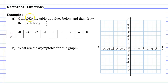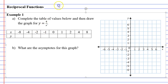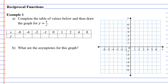Example 1. It says complete the table of values below and then draw the graph for y equals 4 over x. We can see that this is a reciprocal function because the denominator is a pronumeral or variable, in this case x.